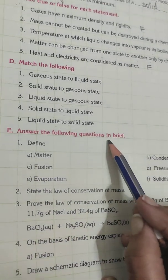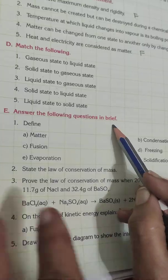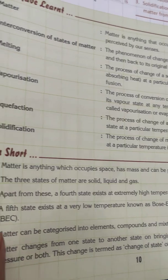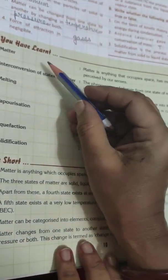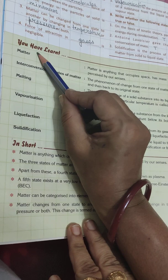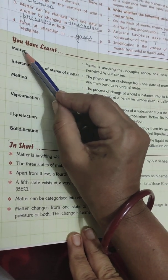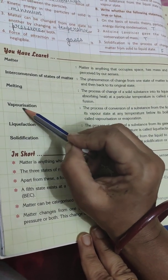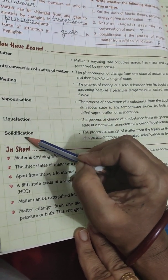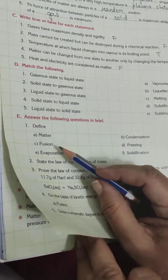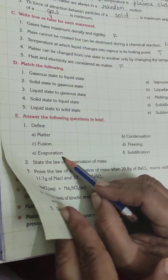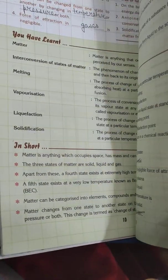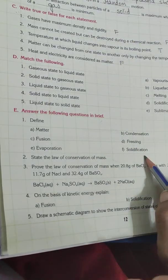Now answer the following questions in brief. For this you will get all the answers on page number 10. Here you have the definition of matter, interconversion of states of matter, melting, vaporization, liquefaction, solidification. Also fusion means melting, evaporation, condensation, freezing, and solidification. Please write the answers.